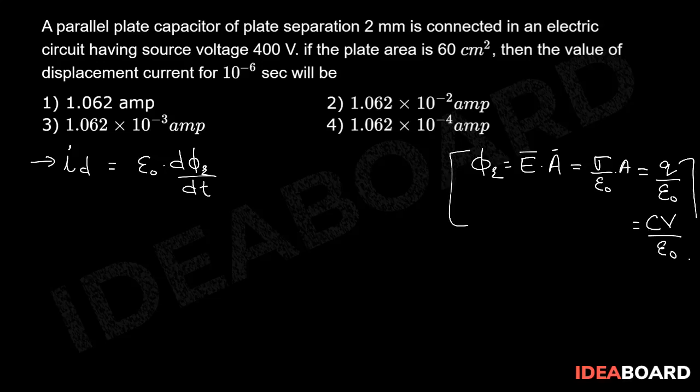Substituting the value in the equation, we can write this entire thing as ID equal to C dV by dt. So further I can write ID as capacitance is epsilon naught A by distance d into delta V by delta T.